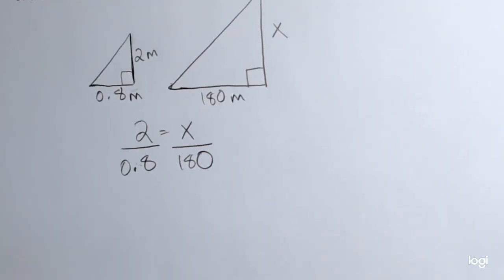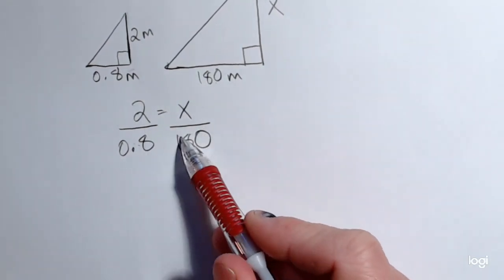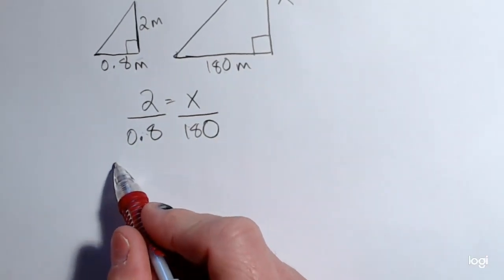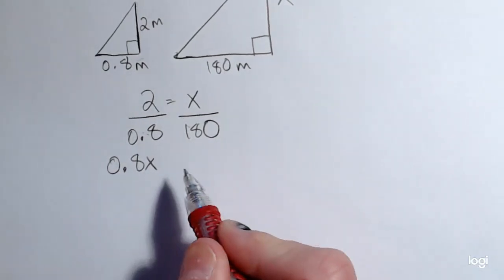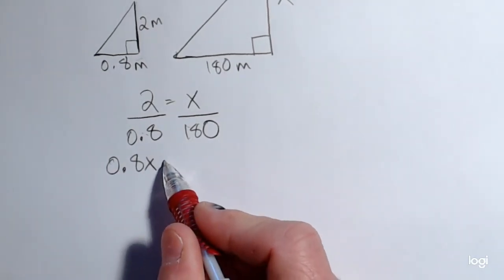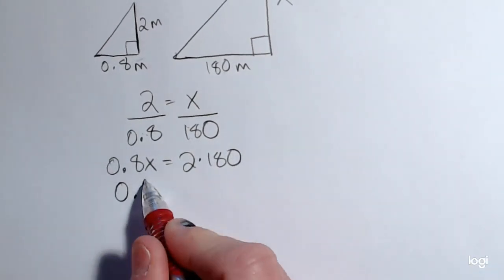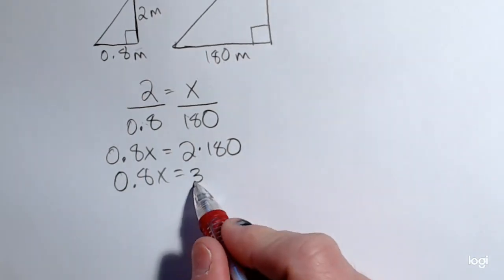Now that I have it set up as a proportion, I could go ahead and cross multiply. That's a shortcut for solving a proportion problem. So that's going to be 0.8X, or 0.8 times X, is equal to 2 times 180. So cleaning this up a little bit, I have 0.8 times X is equal to 360.